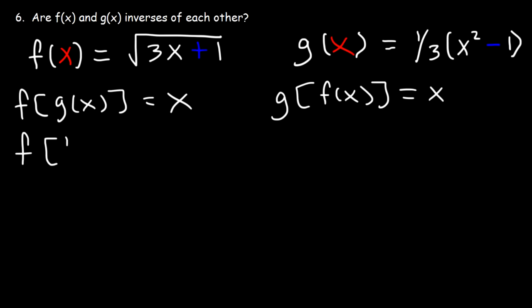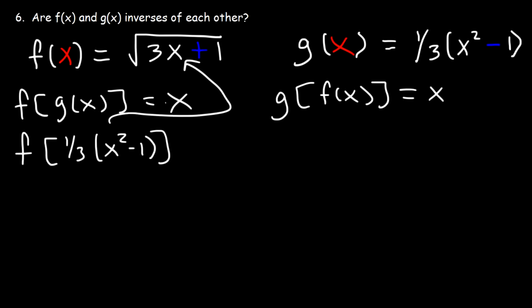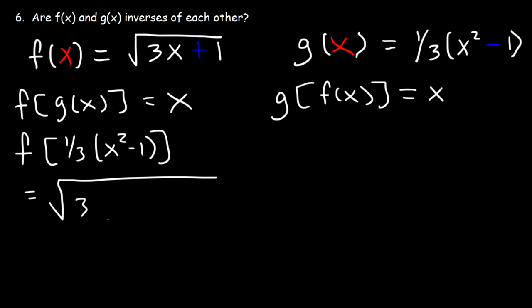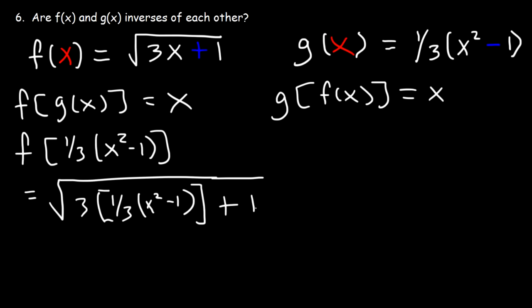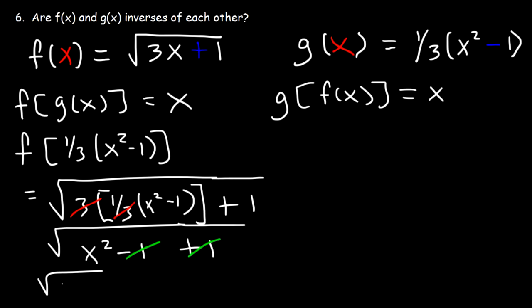So this is going to be f of 1 third x squared minus 1. We're going to take that and insert it into the equation. So it's going to be the square root of 3, and instead of writing 3x, we replace x with 1 third times x squared minus 1, plus 1 inside the square root. 3 times 1 third is simply 1, so we have 1 times x squared minus 1, which is just x squared minus 1. Negative 1 plus 1 adds up to 0. And the square root of x squared is x.